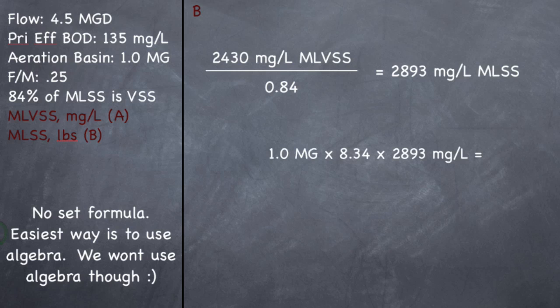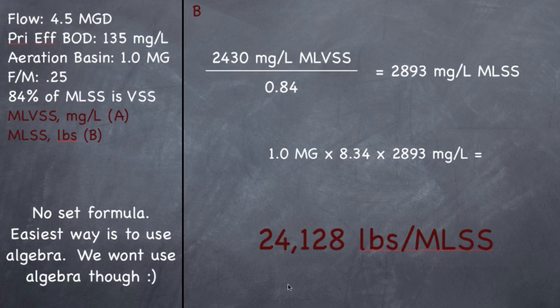When I do that, you should get a mixed liquor suspended solids concentration of 2,893 milligrams per liter. So when I do a pounds formula, 1 million gallons is the aeration basin volume times 8.34 times 2,893, should give you an answer of 24,128 pounds of MLSS in the aeration basin. And that's it.